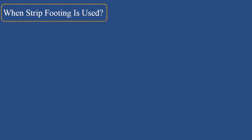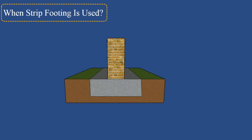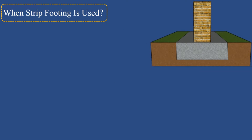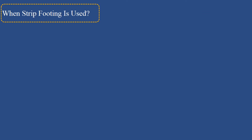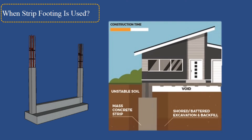Commonly, strip footing is used as a foundation of load-bearing walls, but the soil should have good bearing capacity. If the bearing capacity of the soil isn't good, you can still use strip footing by building wider footings with reinforced concrete. Strip foundation is preferred for low-rise to medium-rise residential buildings, and in some cases they are used to support a row of closely spaced columns.